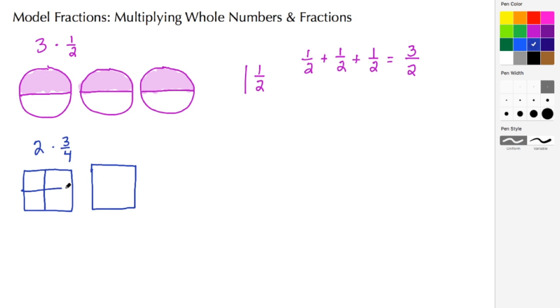We'll do that by just doing a little cross in each one. Then the numerator of this fraction says we need to shade in three of the four pieces, so let's go ahead and do that now.